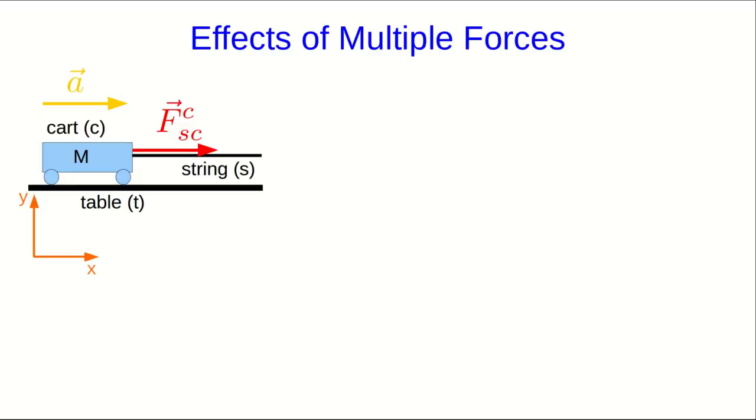So let's start looking at the effects of multiple forces acting on an object. Here's a particularly simple example. There's a cart, it's on a table, it's attached to a string—maybe someone is pulling on the other end of the string—but the end result is that there's some force on the cart due to the string. And so the free body diagram would just look like this. This is a low friction cart, so I haven't included any friction force. And so we just have a perpendicular force due to the table, the usual gravity, and that force due to the string.